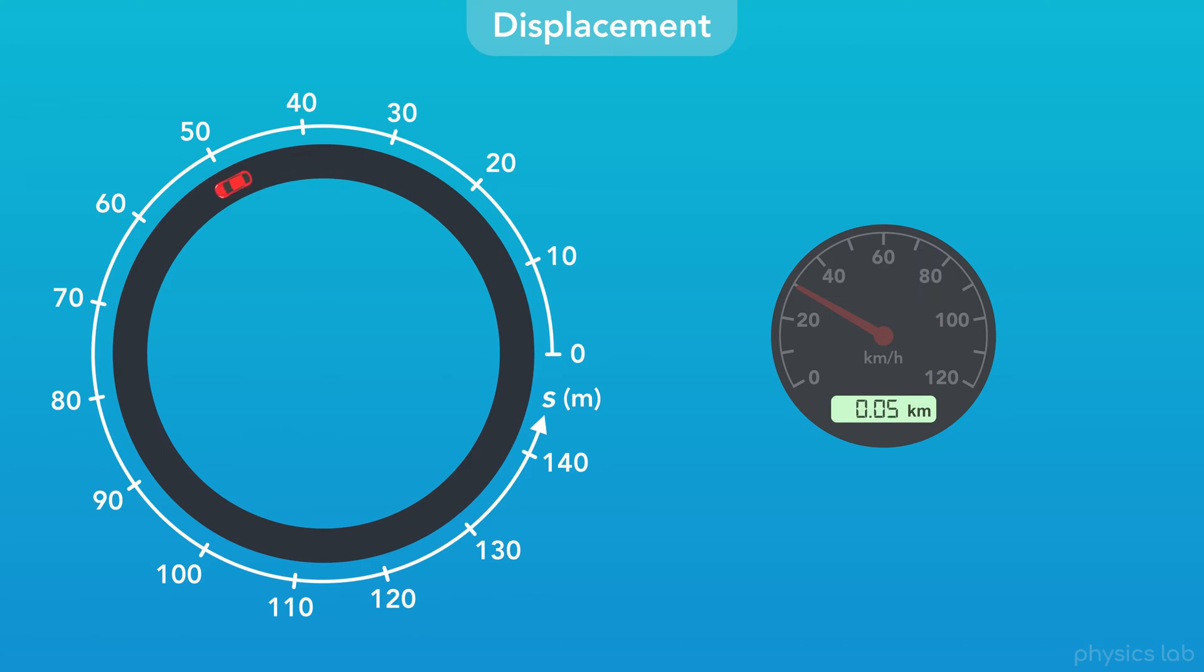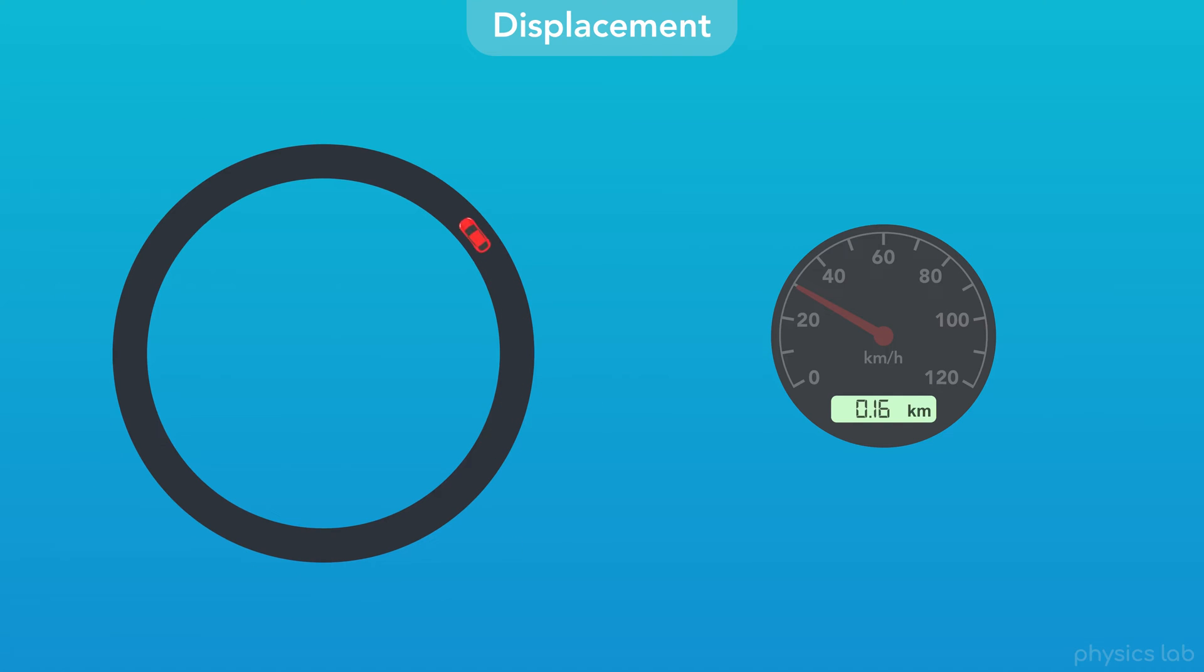It just measures the distance the car travels along whatever path it takes. Even though this track is only 150.8 meters long, what happens to the position and displacement if the car keeps driving around? The numbers don't reset back to zero, they keep going up.